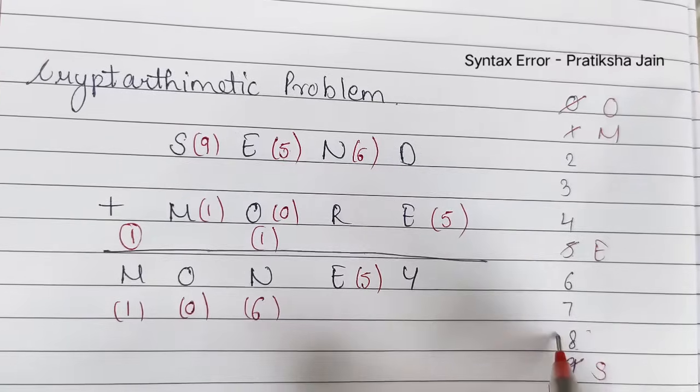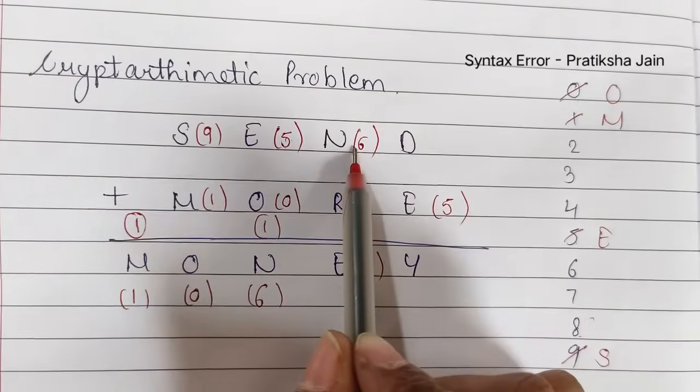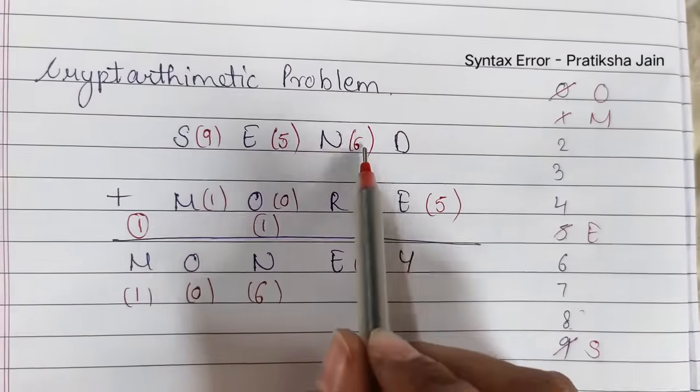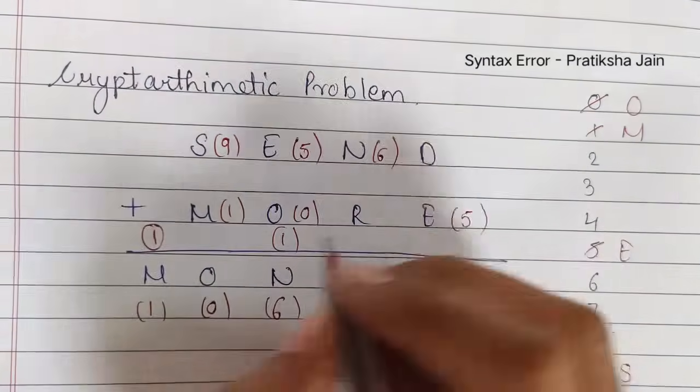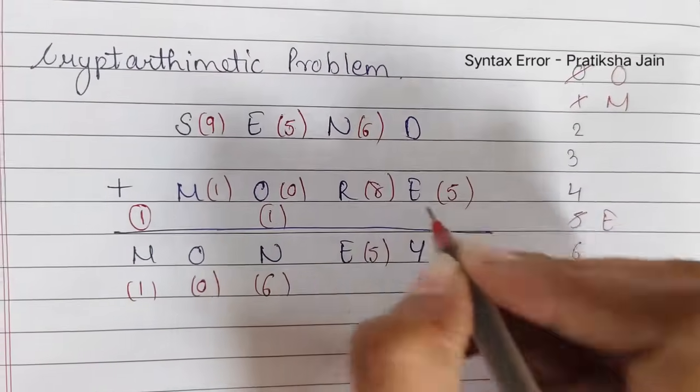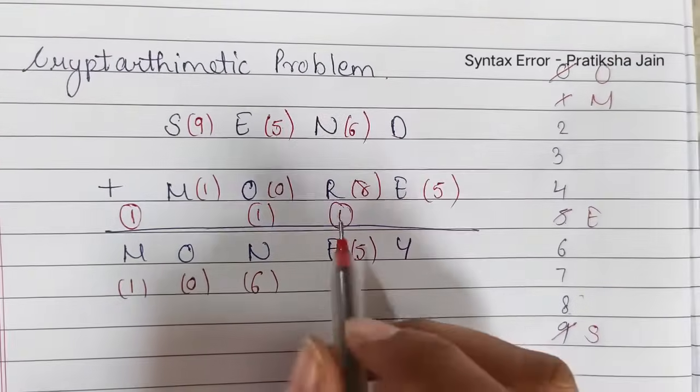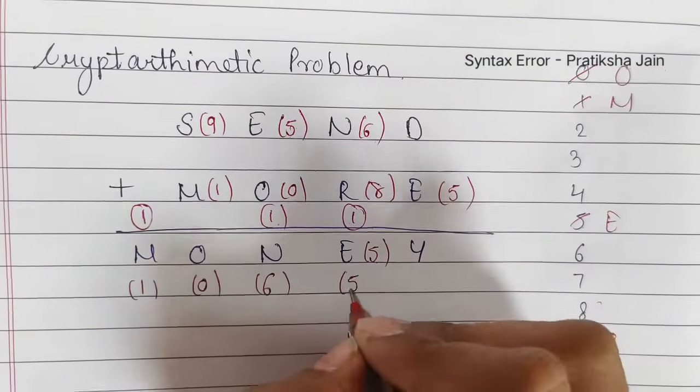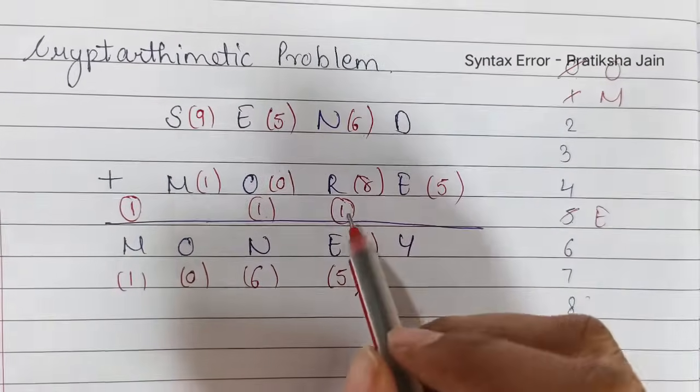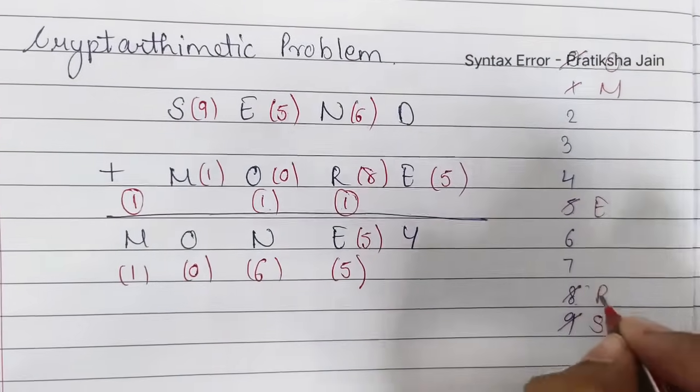And the highest number that is left is 8. So 8 plus 6 gives me 14. Now but we want 5 over here. But 1, 5, 15. So we can take 8 for R and we can take a carry. So this will give us 15. 1, 5, 15. So E became 5. So 8 got assigned to R.